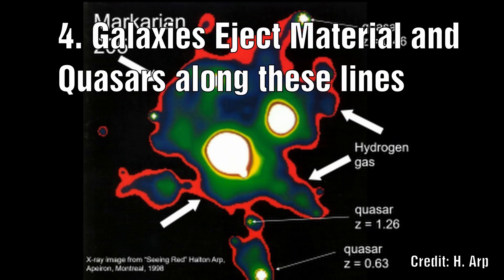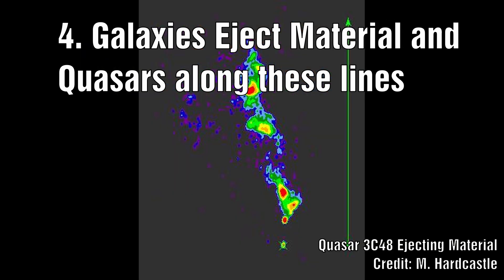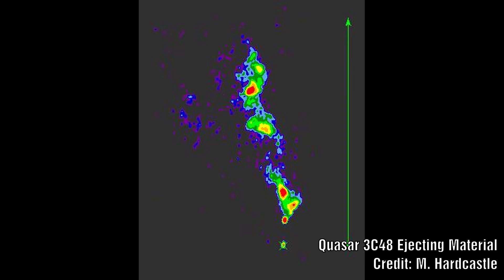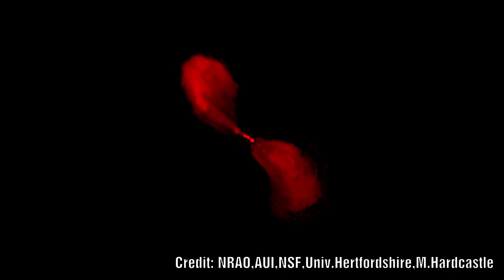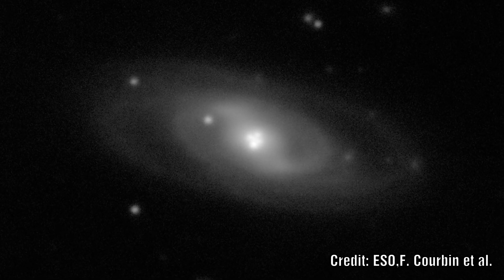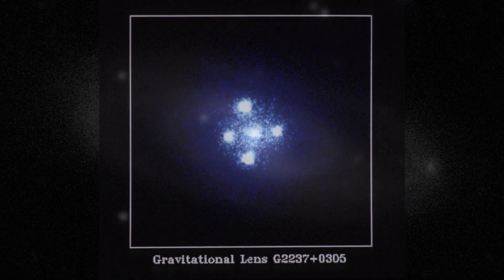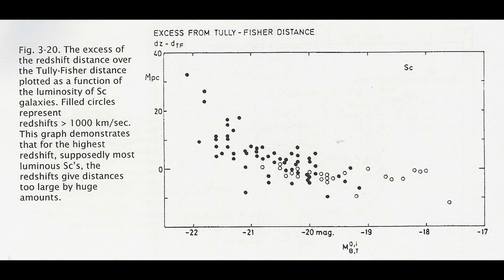Number 4: We see ejection of both material and quasars along these lines. In particular, we see blobs of material ejected which have either X-ray or radio sources in them. We see clear jets from the galactic core ejecting out along these lines, and we even have some examples of quasars that sit very close to the galaxy nucleus, as in the case of the Einstein cross images.